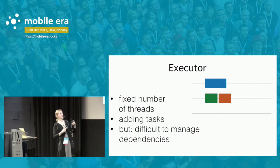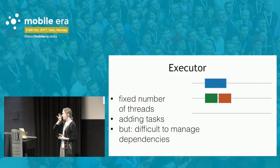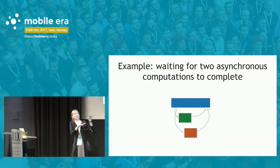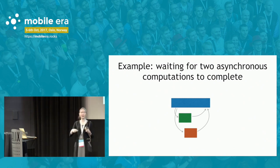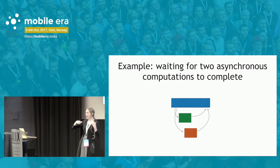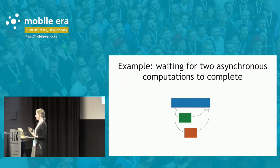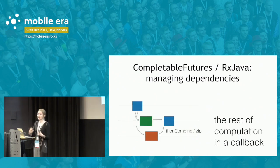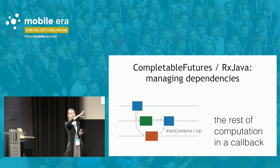However, the difficulty with executors is that it's hard to manage dependencies. If you want to say that my computation depends on another computation, expressing that by hand using executors is really difficult. For example, if a main blue computation starts two new computations — green and red — and waits for their results, how do we implement this via executors? Before Java 8, before completable futures, and before RxJava, it was very difficult. But now with RxJava and completable futures, you extract the rest of your computation into a callback.